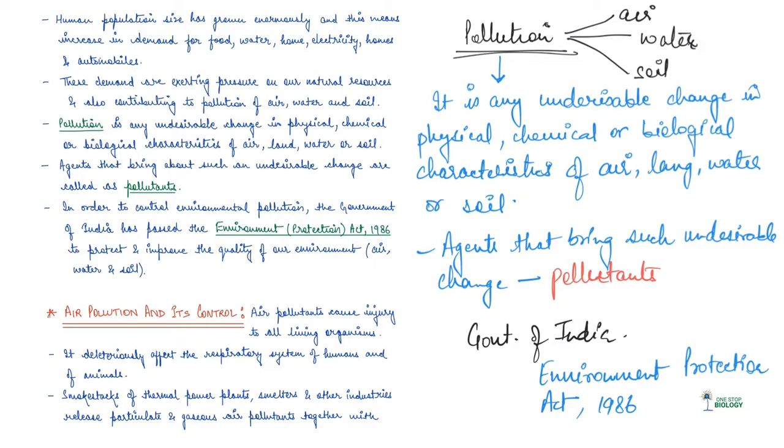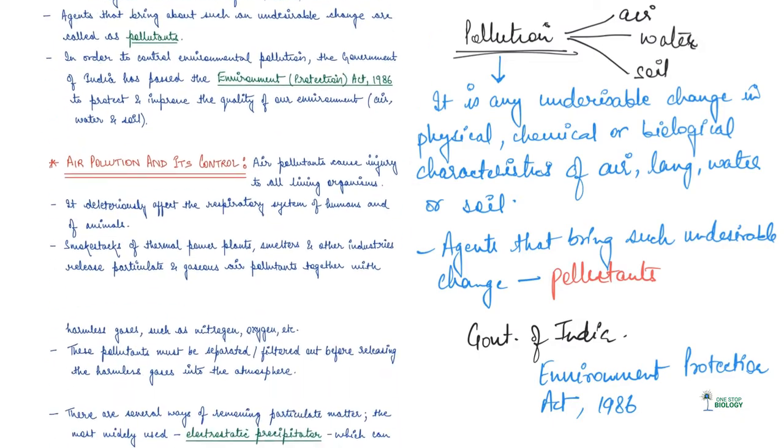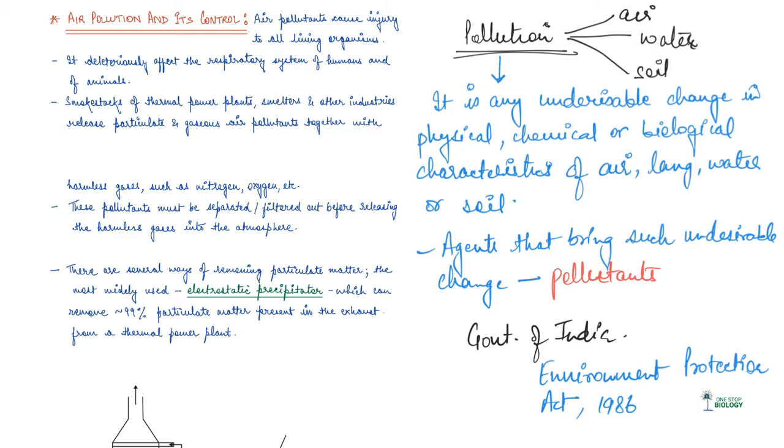Today we are going to discuss all about air pollution and its control. Air pollution is very important because air is very crucial for our respiratory needs. Air pollutants cause injury to all different kind of living organisms. They reduce growth, reduce yield of crops, cause premature death of plants, and affect the respiratory system of all kind of animals, including humans.